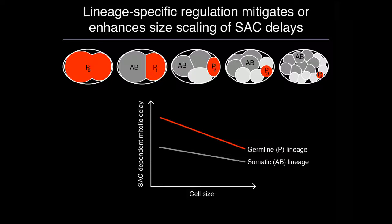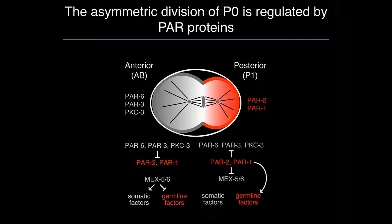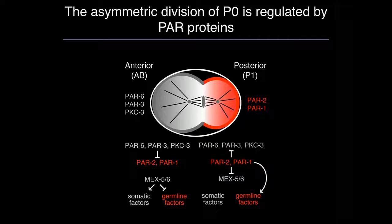It's important to note that we don't know whether this difference is due to differences at the level of the checkpoint itself — its sensitivity to spindle defects or its ability to inhibit the anaphase promoting complex — or in differences in how the different lineages experience spindle defects. To start addressing this, we focused on the two-cell stage with the AB somatic blastomere and the germline P1 blastomere. AB and P1 are specified by the asymmetric division of P0, which is regulated by the PAR proteins.